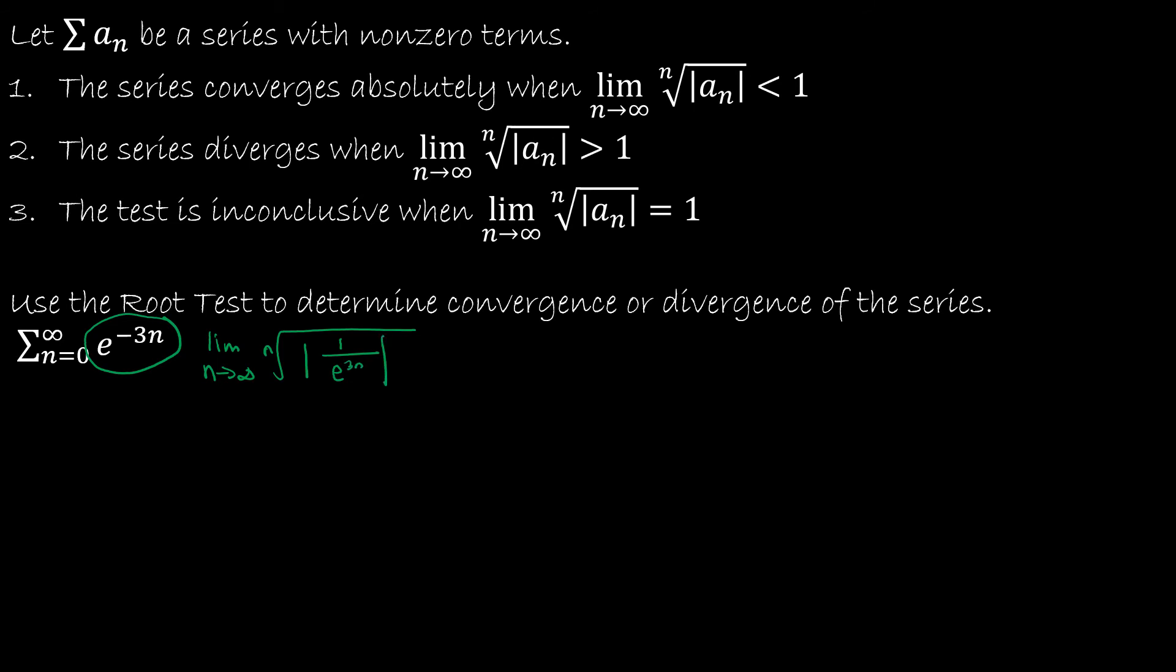And this one's going to take a little bit more use of properties, things that you're familiar with or aware of but maybe haven't used in a while. So I'm going to think of this as the limit as n approaches infinity of the nth root of 1, or the nth root of the absolute value of 1, over the nth root of the absolute value of e to the 3n.